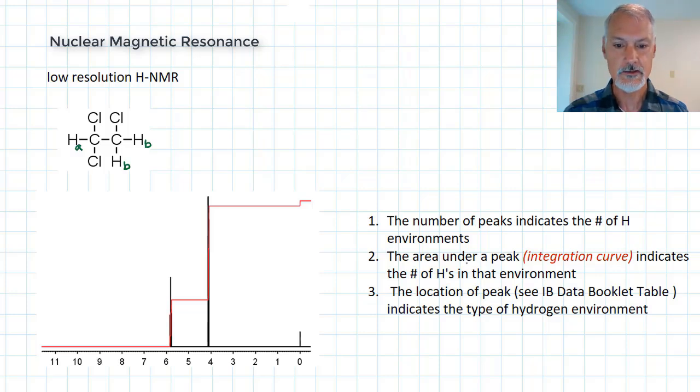The area under the peak, sometimes referred to as the integration peak, indicates the number of hydrogens in that environment. So the integration peak here is shown in red. I can see that if I look at the number of hydrogens in this environment and compare them to the number of hydrogens that exist in this environment, there's probably twice as many hydrogens in this environment because the ratio of the peaks is approximately 1 to 2.